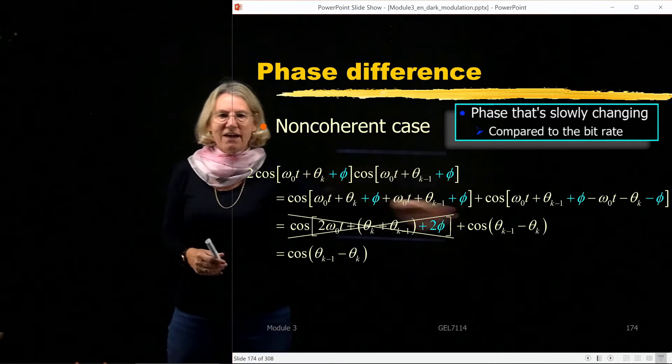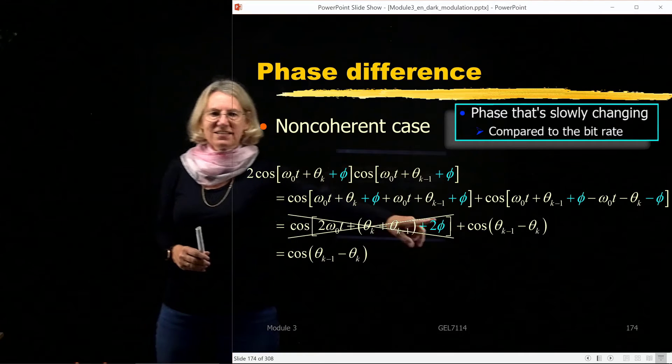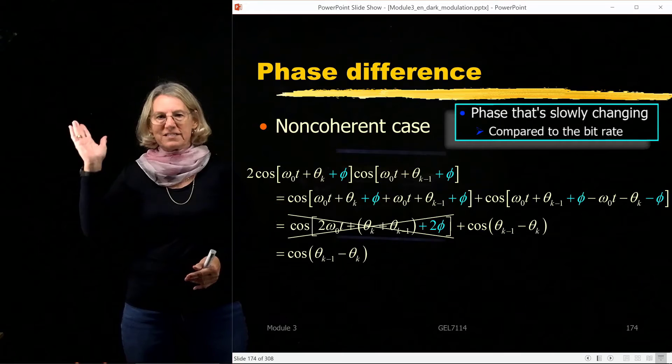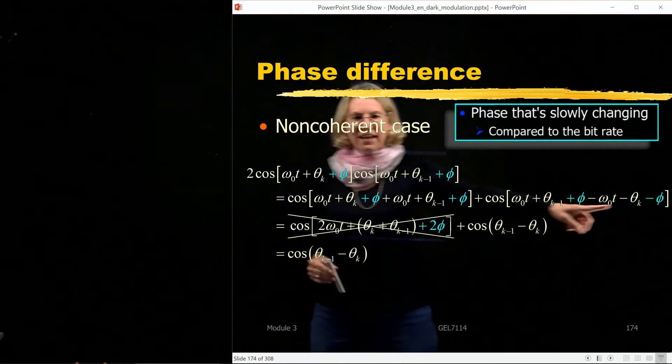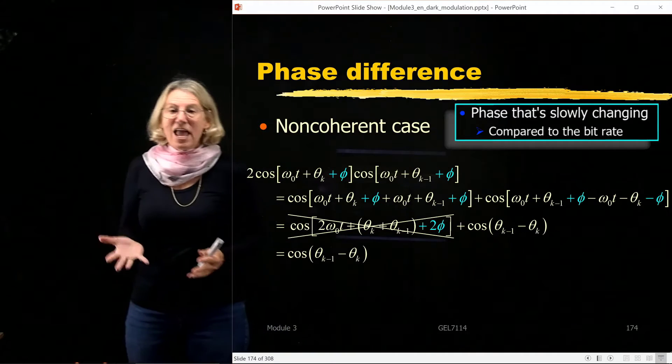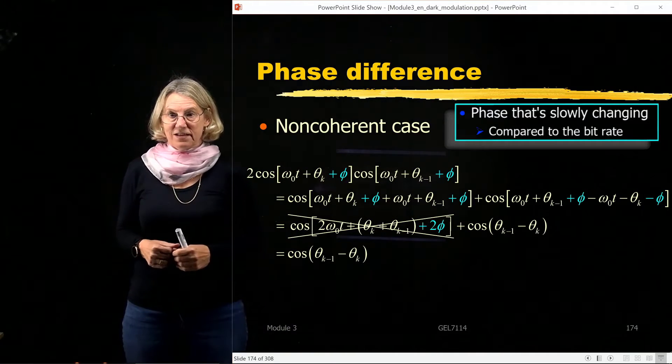Now if I just add this phi everywhere in my equations, I can see that there would be a double phi term and a double frequency term, but that one disappears. And the two phis, they cancel out in the second term. So that means in my baseband, it won't matter what that phase is.